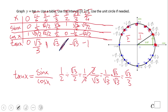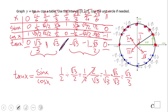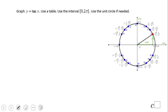At 150 degrees, five pi over six, sine is one half and cosine is negative square root of three over two, giving us negative square root of three over three. At 180 degrees, pi, sine is zero so tangent is zero. You can already notice we go back to zero — there are patterns here. Quadrant three gives whatever you have in quadrant one, and quadrant four matches quadrant two.